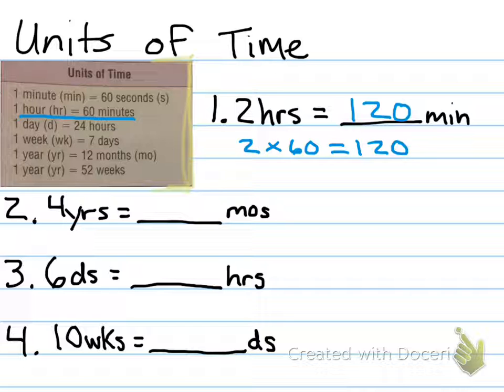Let's look at number two. Four years is equivalent to how many months? Well, I see that one year is equivalent to 12 months. So, we're talking four times that amount. Four times 12 months in a year, because we want four years worth. Four times 12, 12, 24, 36, 48. 48 months.